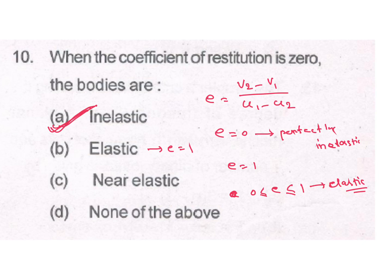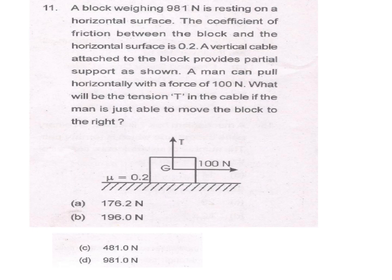A block weighing 981 N is resting on a horizontal surface. The Coefficient of friction between the block and the horizontal surface is 0.2. A vertical cable attached to the block provides partial support as shown. A man can pull horizontally with a force of 100 N. What will be the tension T in the cable if the man is just able to move the block to the right?